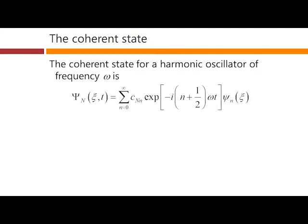The coherent state for a harmonic oscillator of frequency omega is this state. It's a linear superposition of harmonic oscillator wave functions, each with their corresponding time-dependent exponential factor, and a specific set of coefficients.